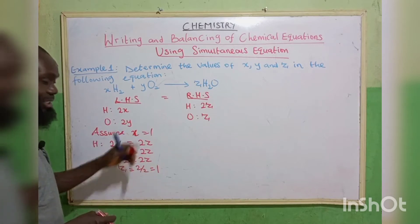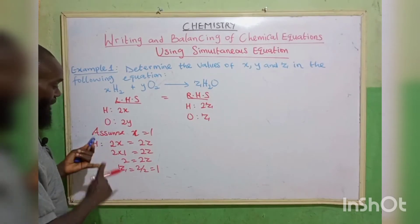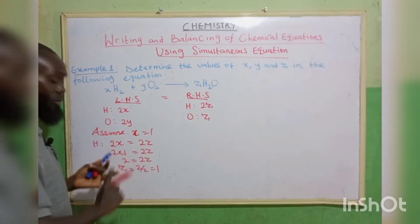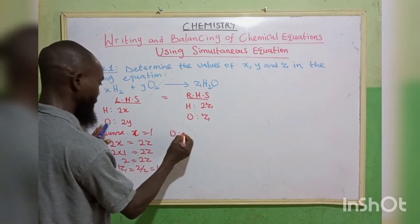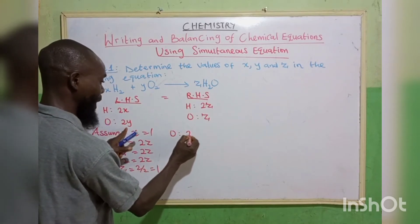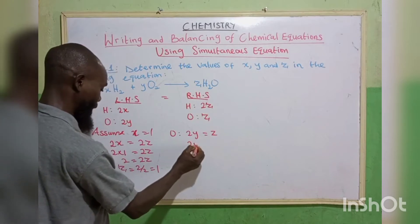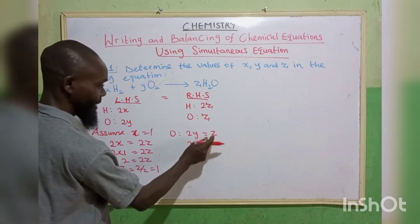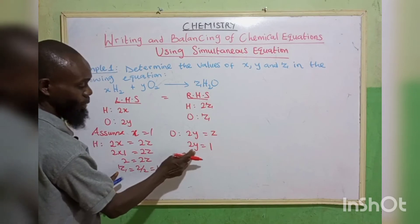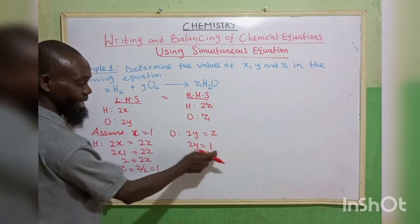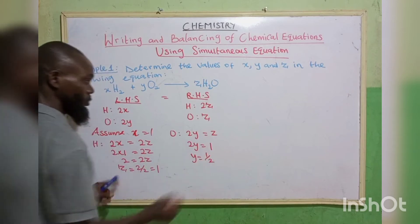Our X is already 1. Now we've gotten X and Z; we still need Y. For oxygen: 2Y equals Z. Since Z equals 1, we have 2Y equals 1. Divide both sides by 2: Y equals 1 over 2.